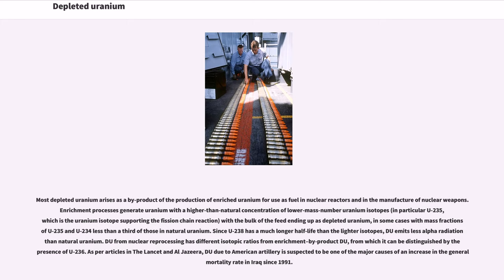Since U-238 has a much longer half-life than the lighter isotopes, DU emits less alpha radiation than natural uranium. DU from nuclear reprocessing has different isotopic ratios from enrichment by-product DU, from which it can be distinguished by the presence of U-236. As per articles in The Lancet and Al Jazeera, DU due to American artillery is suspected to be one of the major causes of an increase in the general mortality rate in Iraq since 1991.